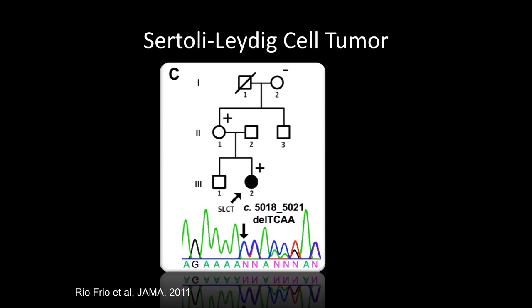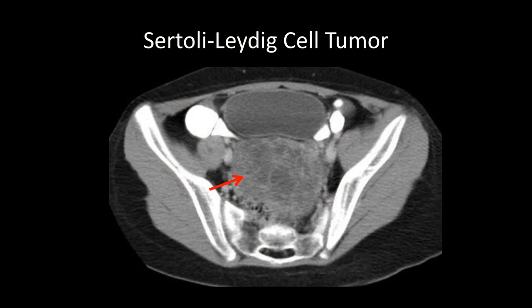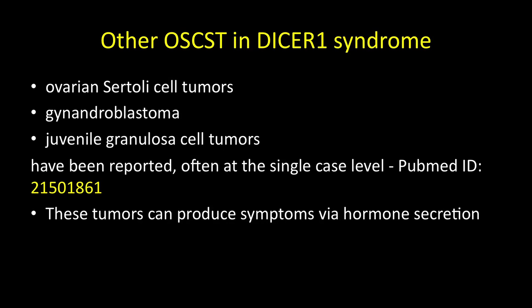SLCT and goiter occurring together is pretty much a hallmark feature of DISA. If you see somebody with a Sertoli-Leydig cell tumor coming to you as an endocrinologist because of androgen symptoms, think about whether there might be a DISA mutation, particularly for early onset cases. We've seen SLCT in a DISA carrier in their 50s, but they're usually younger. Other sex cord stromal tumors are seen in DISA syndrome — ovarian Sertoli cell tumors, gynandroblastomas, and juvenile granulosa cell tumors — though these have mostly been reported at case report level.